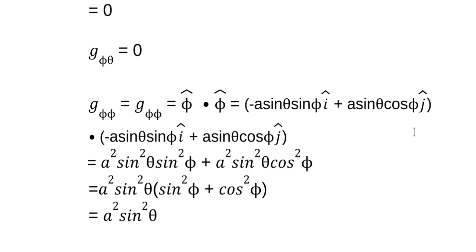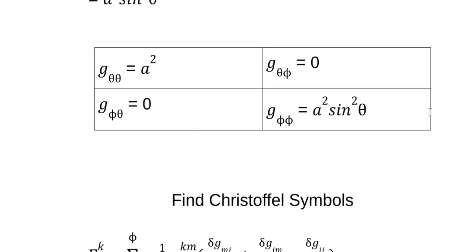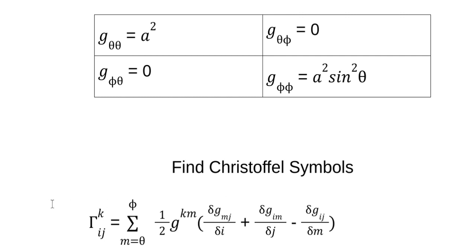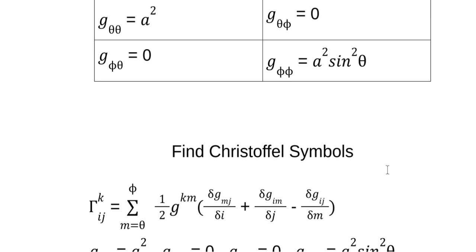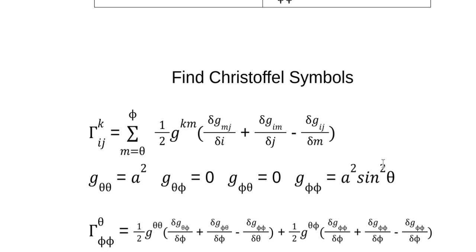Now we can use our metric tensor to define our connection coefficients — the Christoffel symbols. Here's the metric we have; we want to find our Christoffel symbols using this equation. The k index represents our coordinates, theta and phi. We need to do this with k being theta, then all the permutations of theta and phi, which turns out to be four. Then four with k being phi, so we get a total of eight. When you see an upper index, it means the inverse — for example, g^(theta,theta), the inverse of that is 1/a². You fill in what you need, and when you see an index upper and lower, remember it's a sum.